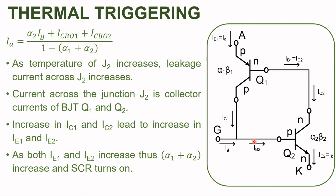For thermal triggering: as the temperature of junction J2 increases, the leakage current across J2 also increases. This current is the collector current for transistors Q1 and Q2. The increase in collector currents triggers an avalanche process that increases the emitter currents of both transistors, raising alpha1 and alpha2. The denominator of the IA equation tends to zero and the anode current tends to infinity, so the SCR turns on.